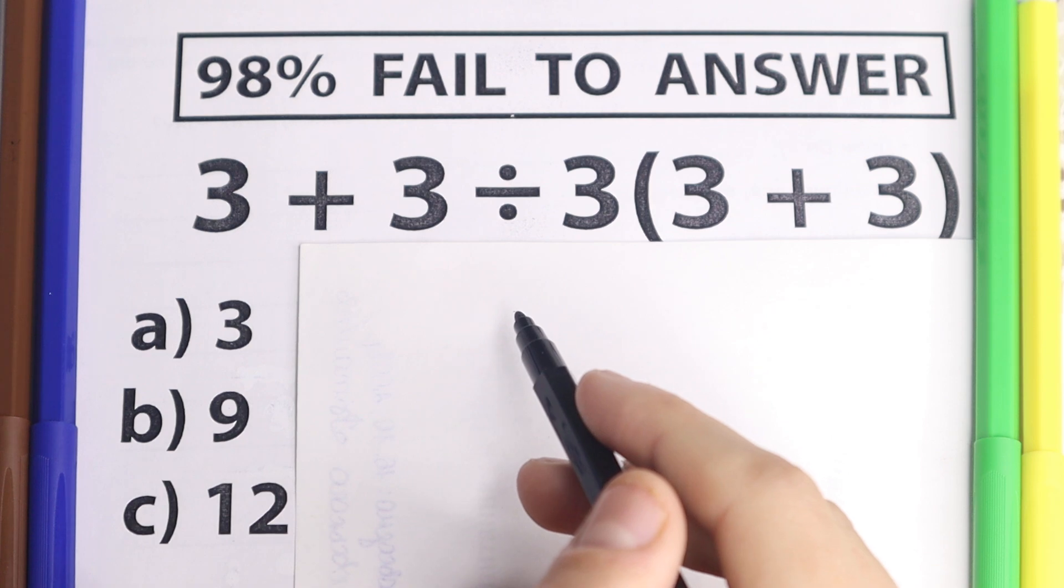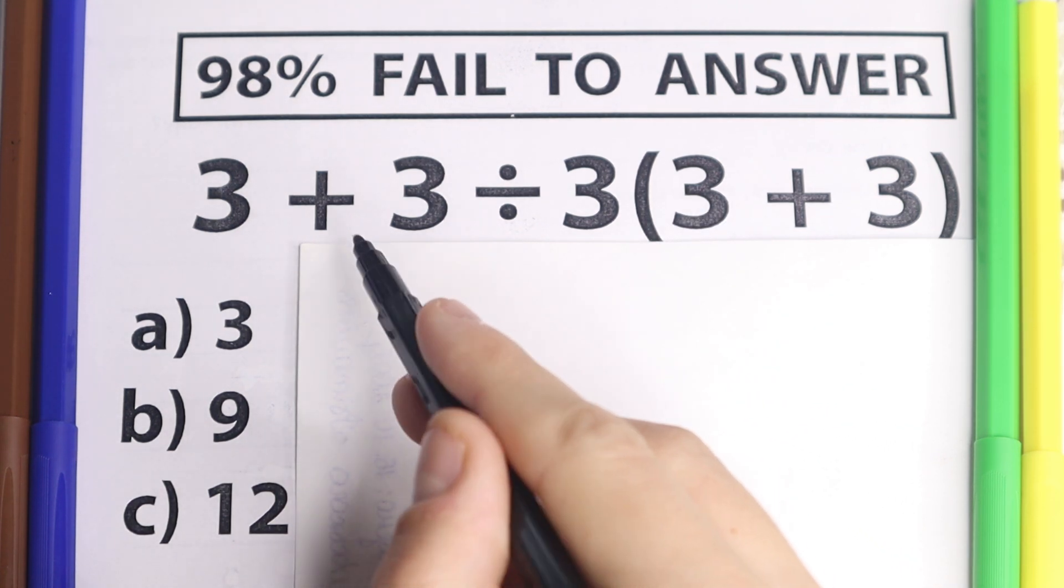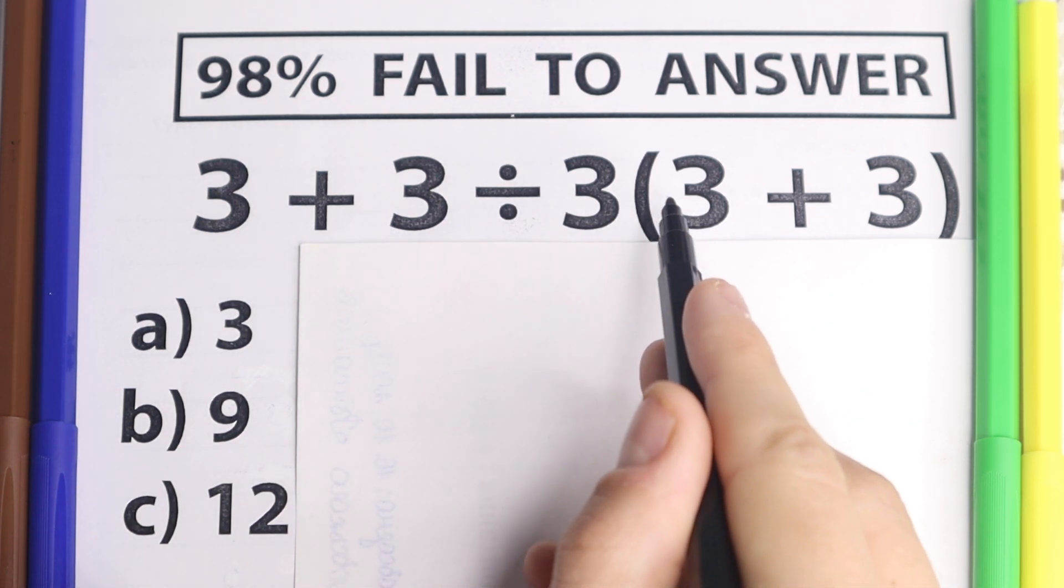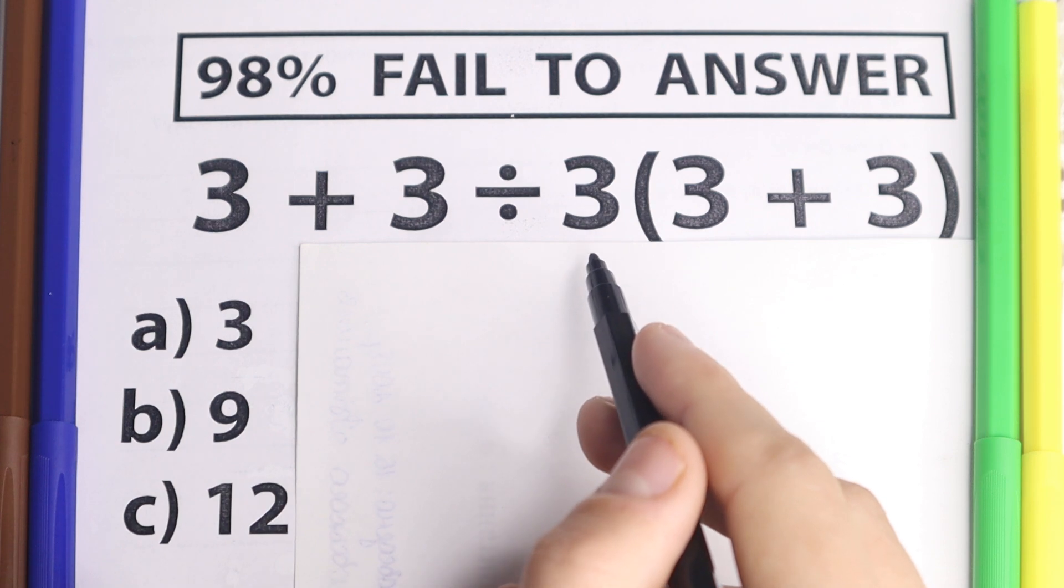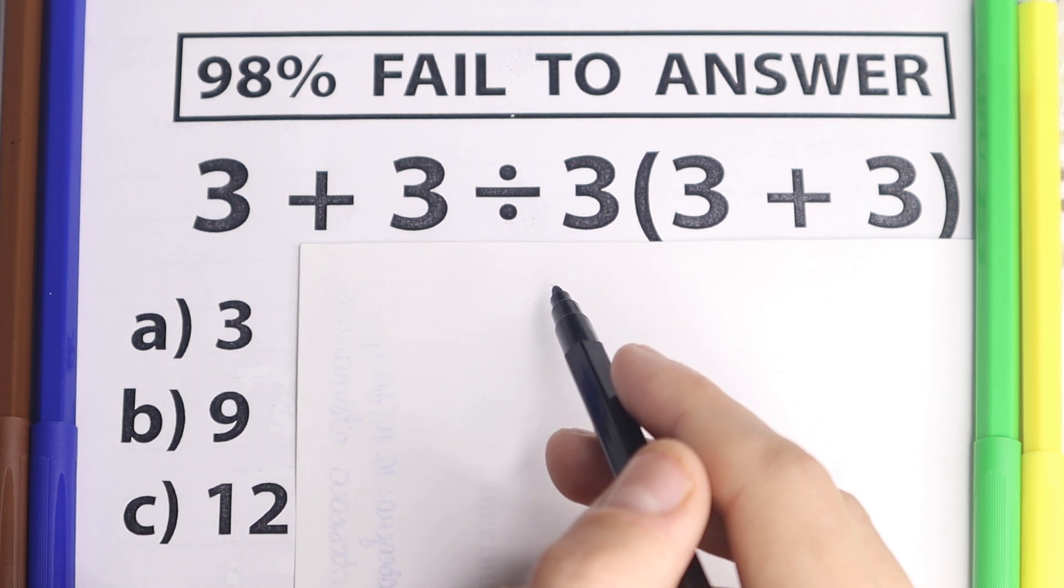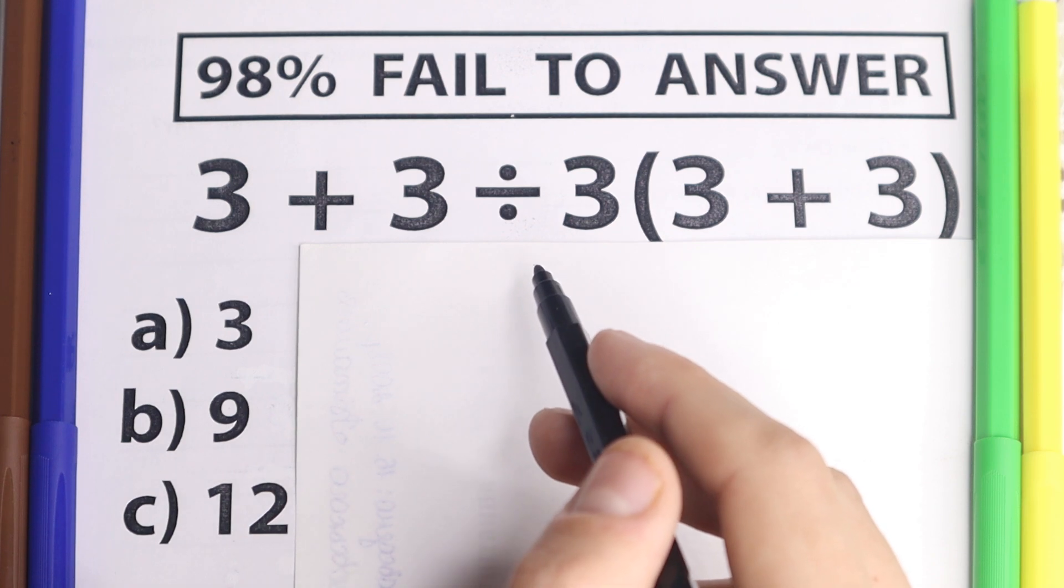So I don't want you to use your calculator right here, because here is a problem. We have 3 plus 3 divided by 3 times 3 plus 3 in parentheses, so what is the correct answer? Of course most of you out there are like yes I can handle this problem.